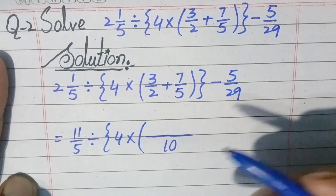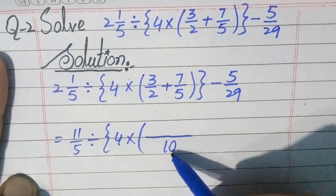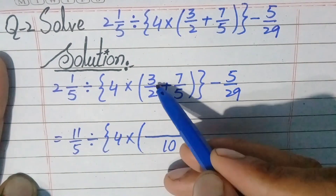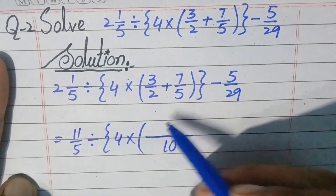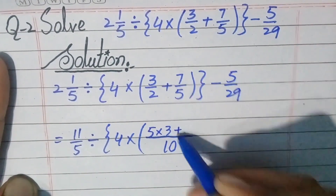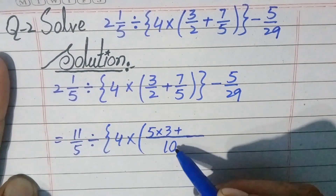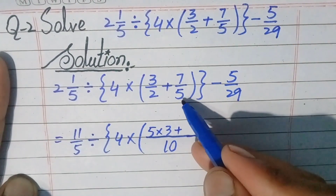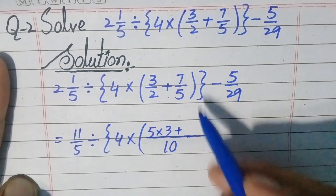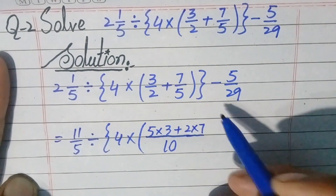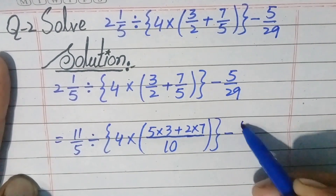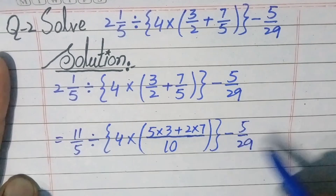To further simplify: divide 10 by 2 — 2 times 5 is 10, answer is 5 — multiply 5 with 3, giving 5 times 3. Write the plus sign. Then divide 10 by 5 — 5 times 2 is 10, answer is 2 — multiply 2 with 7, giving 2 times 7. Parenthesis close, braces close, minus 5/29.